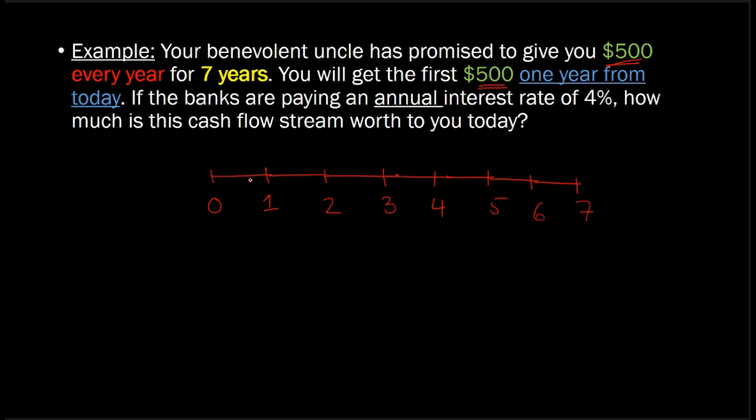And what your uncle is effectively saying is that he's going to give you $500 one year from now, another $500 two years, so on and so forth. So this happens here, here, here, six, and then the last one happens over here.